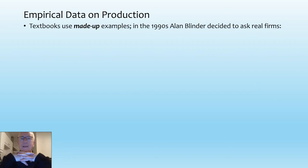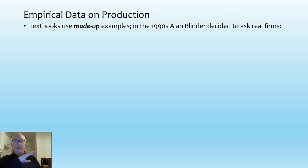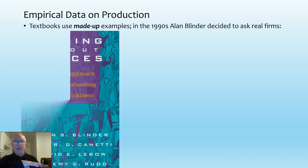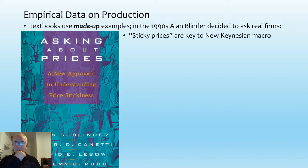As I emphasise, those are all made-up examples. They're not derived from going and asking real firms — even various wheat firms, which might be close to something you might argue is perfectly competitive. They're made up by the textbook author. Now, in the 1990s, Alan Blinder decided to ask real firms what their actual cost structures were, and this is the book produced as a result of the surveys he undertook.